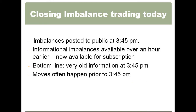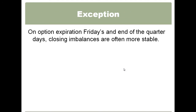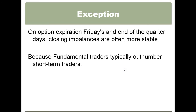Sometimes these trades can become so crowded or oversubscribed that the imbalances can actually flip — where you'll see a 100,000-share buy imbalance become a 100,000-share sell imbalance. I also believe there are games being played with these, so the 3:45 published imbalance is very difficult to use. There is an exception though: the third Friday — option expiration — and end of quarter days tend to be pretty good. A lot of the imbalances on those days were real.